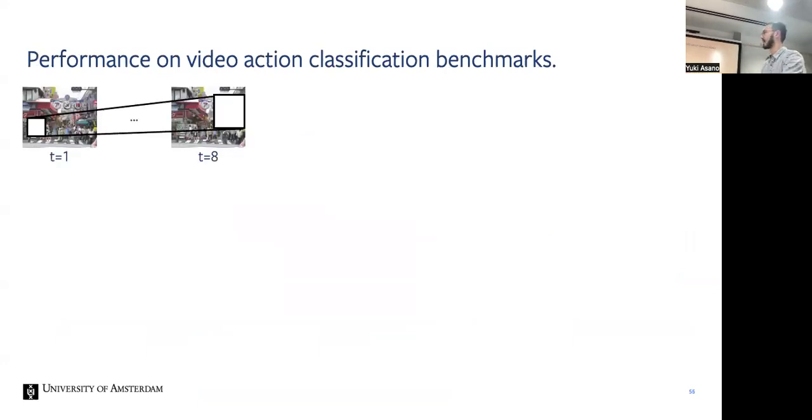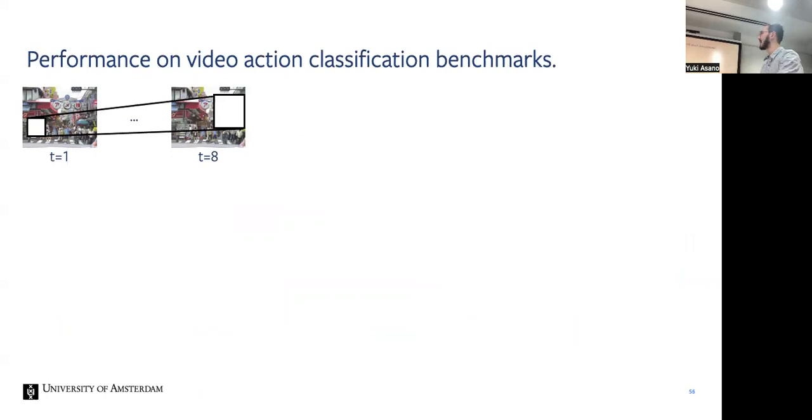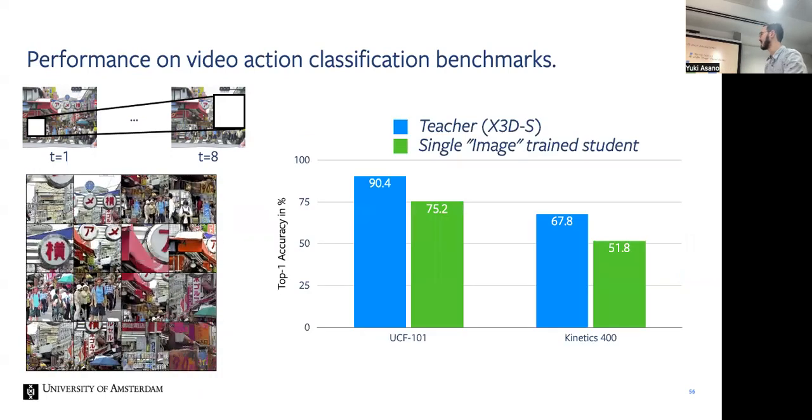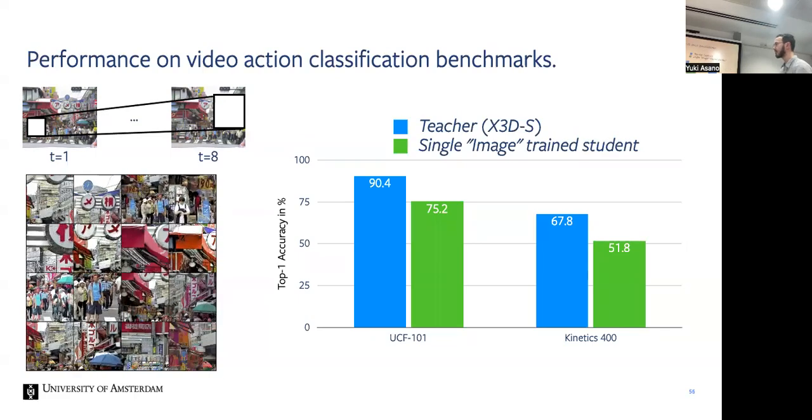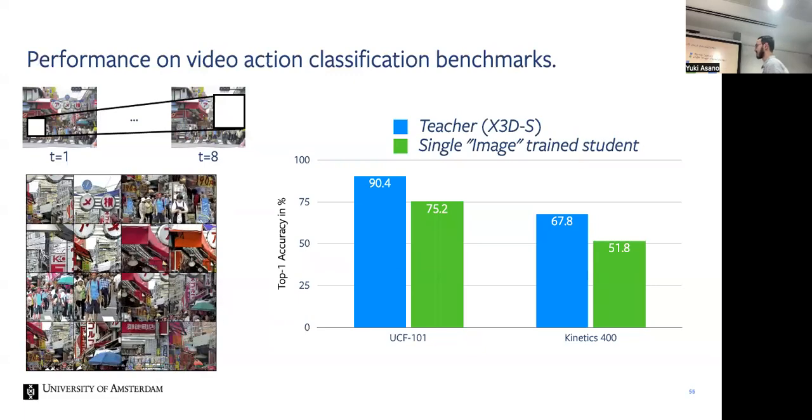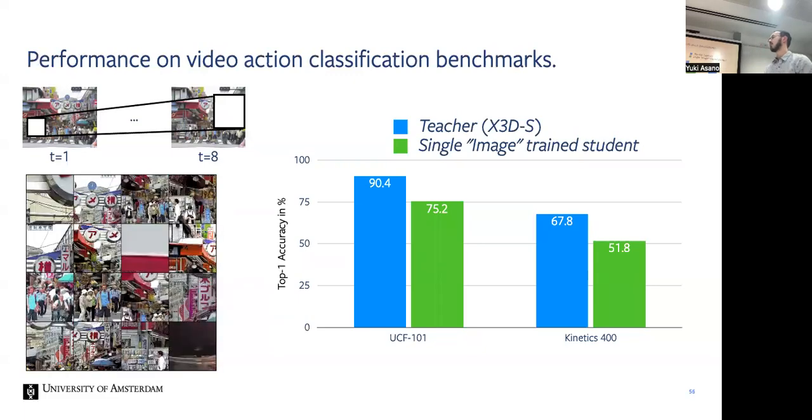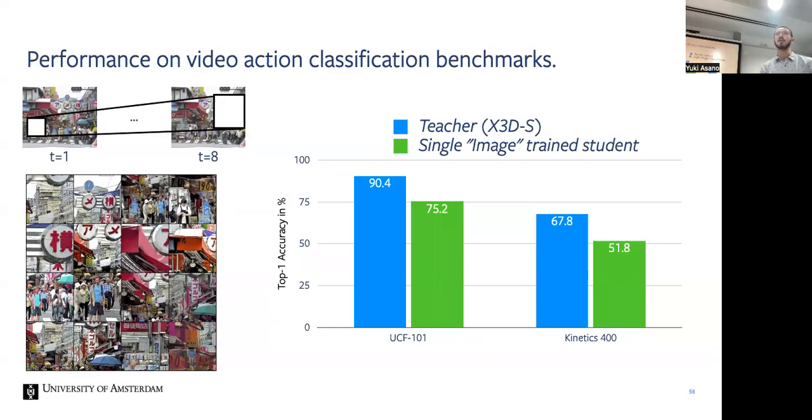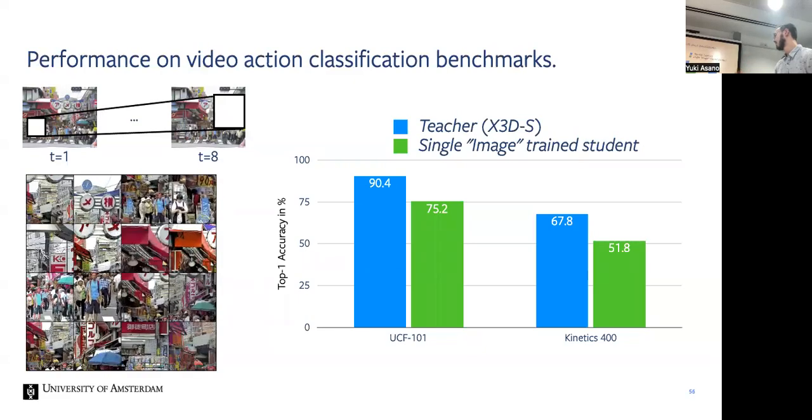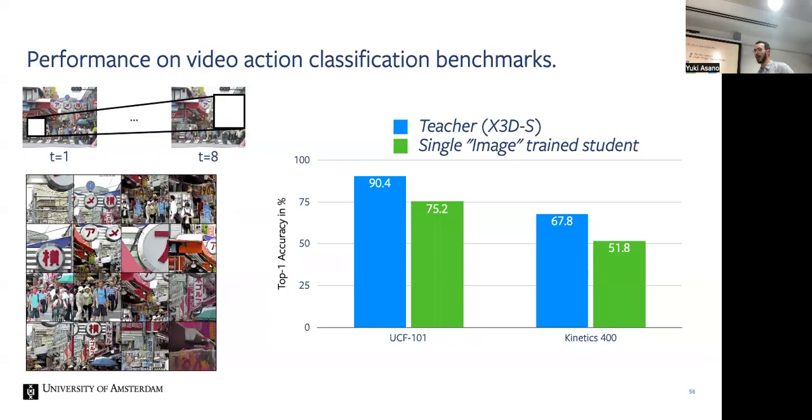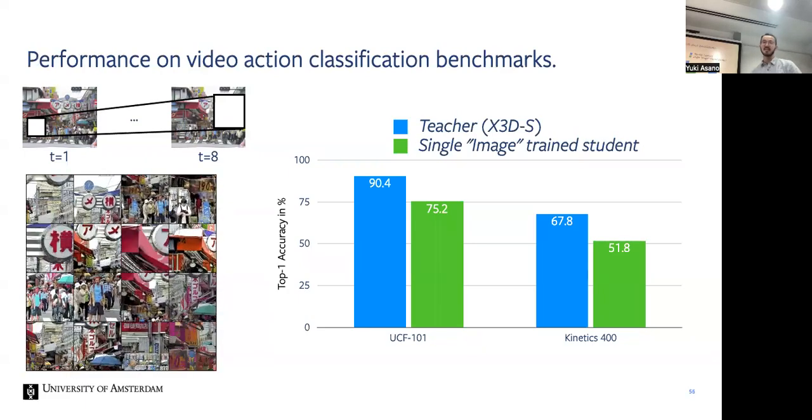And funnily enough we tried how it works on Kinetics and UCF and it's not quite as good as a teacher. In this case we didn't try it that hard because it takes quite some time to run video models. But all of these ones are basically 200 epochs on ImageNet, 200 epochs on Kinetics. And you still get 52% top-1 accuracy on a classification dataset of videos.